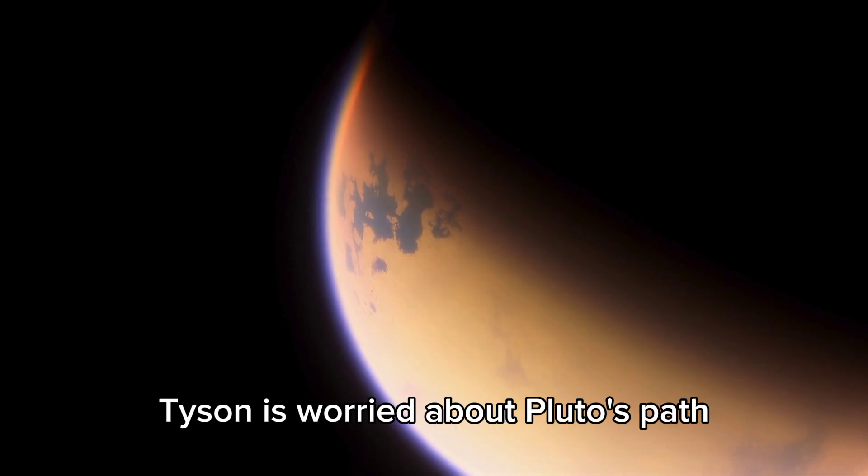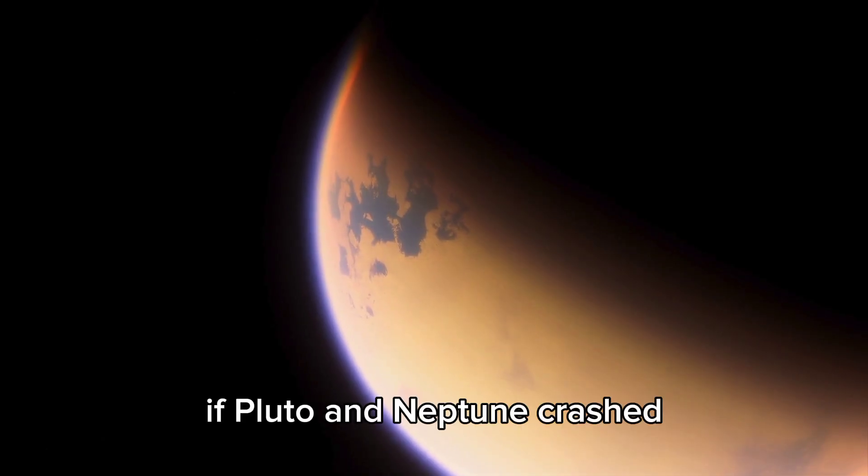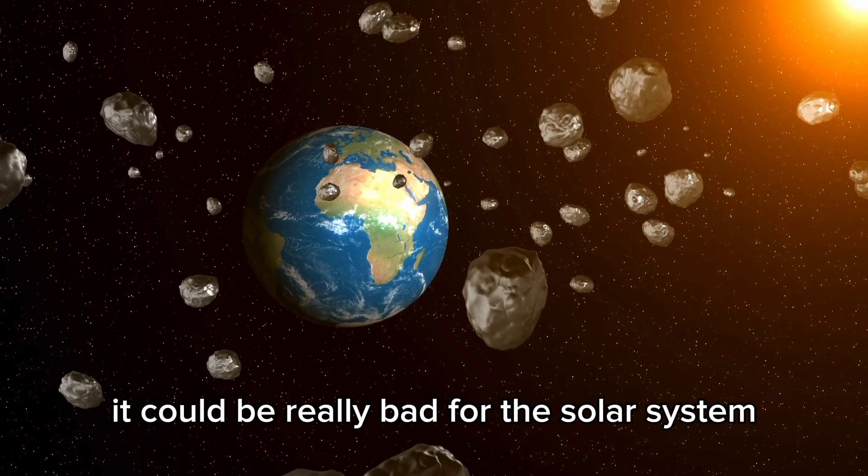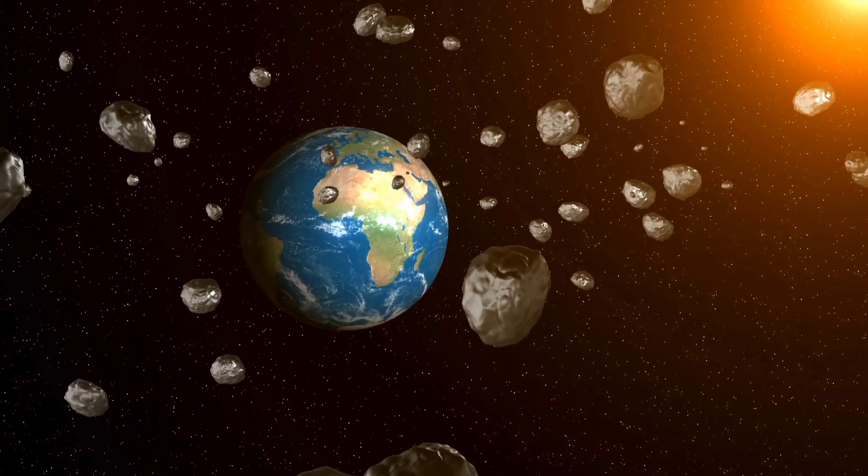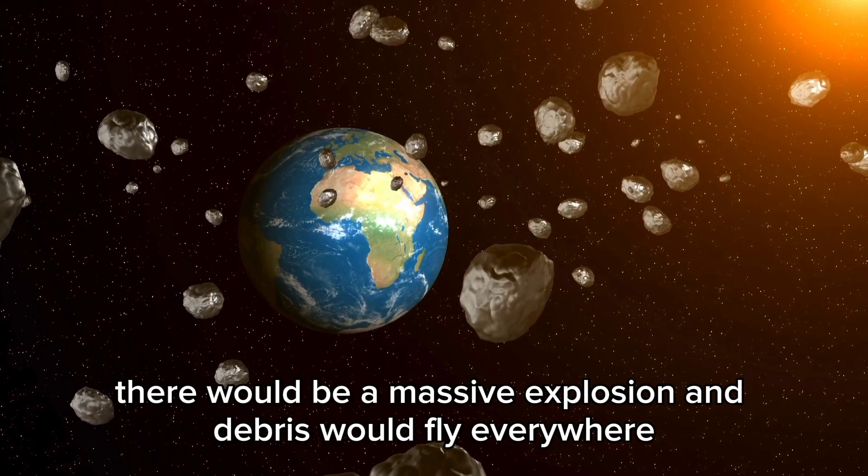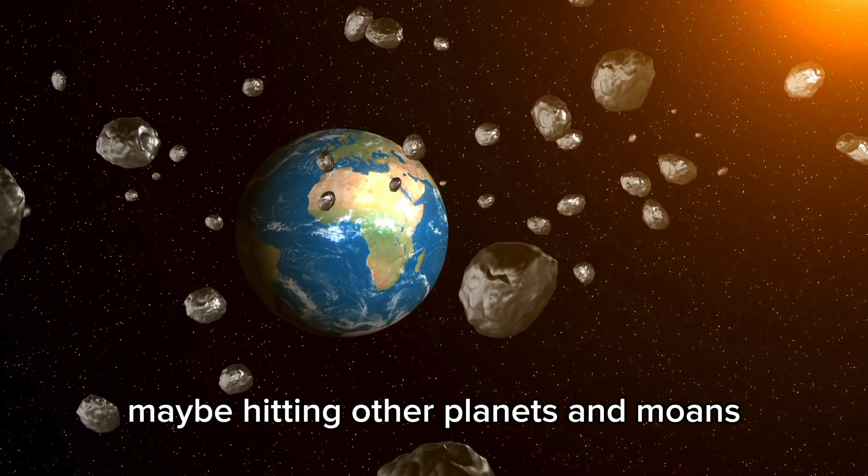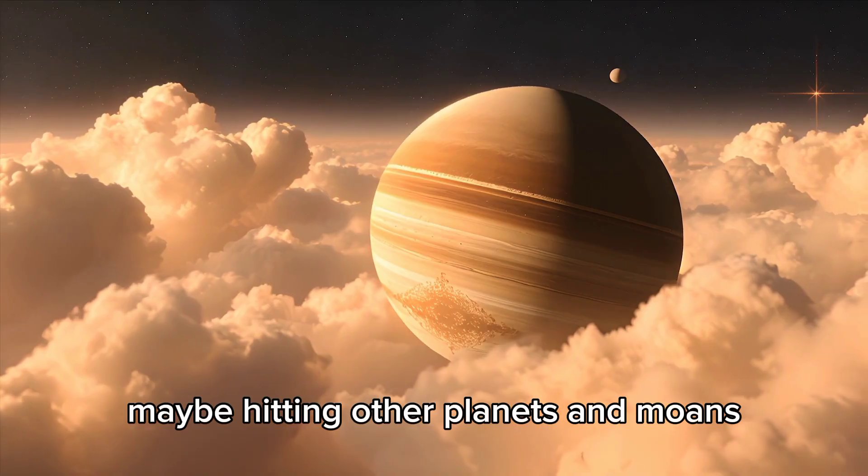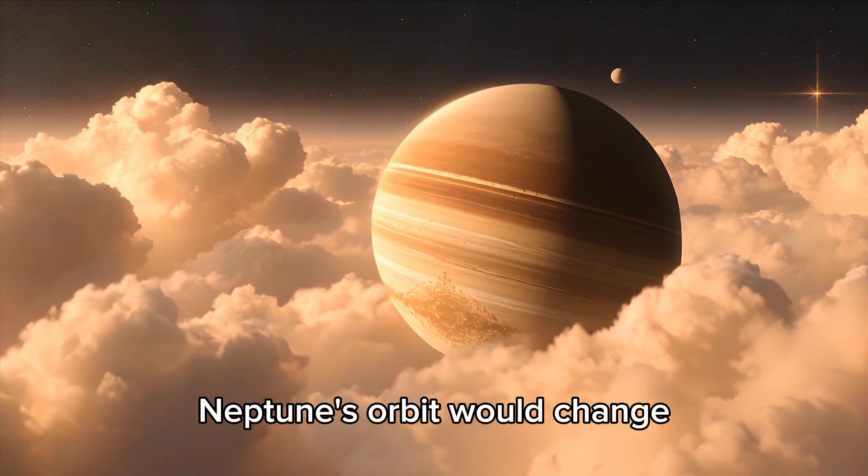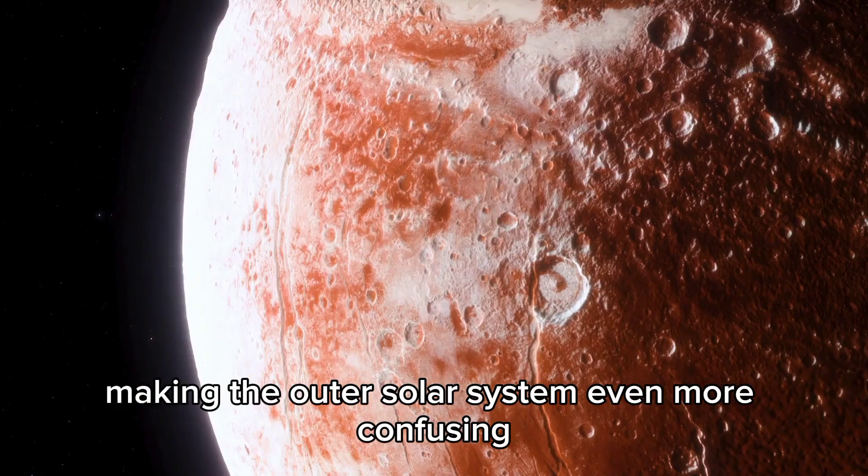Tyson is worried about Pluto's path. If Pluto and Neptune crashed, it could be really bad for the solar system. There would be a massive explosion, and debris would fly everywhere, maybe hitting other planets and moons. Neptune's orbit would change, making the outer solar system even more confusing.